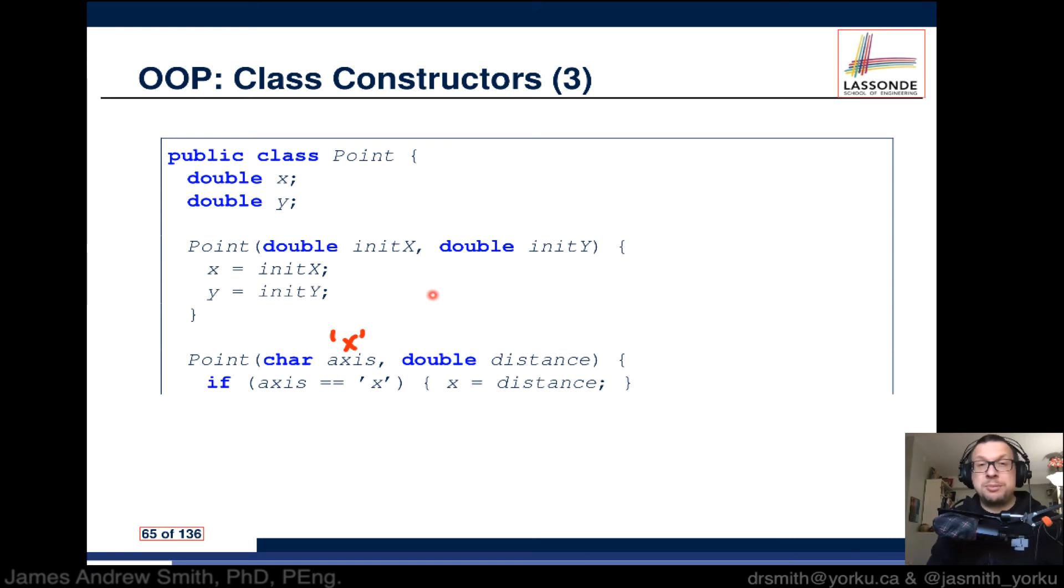Or we say that if the axis was equal to the character y, then we're going to set up the y distance, and basically the one that isn't being initialized will be set to its default value, maybe zero.